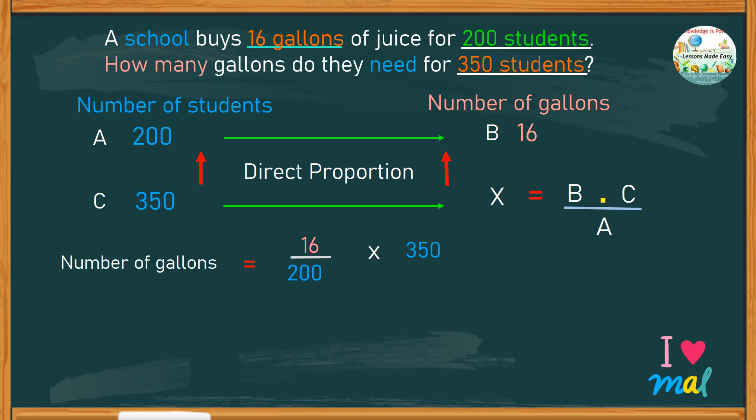As you can see, this number sentence follows the same formula we discussed earlier. Let's continue to find out the number of gallons required. 16 over 200 can still be simplified as 2 over 25, since both the numerator and denominator can be divided by 8 as their highest common factor. Then multiply by 350, since this number is divisible by 25,